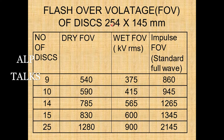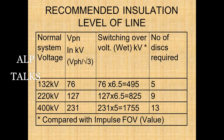For disc insulators, the number of discs varies: 9, 10, 14, 15, or 25 discs depending on voltage level. Dry FOV and wet FOV values correspond to the voltages the insulation can withstand under dry and wet conditions respectively. The standard full-wave impulse voltage is also specified — for example, for 25 discs with dry FOV of 1280 kV, the impulse FOV can be 2145 kV.